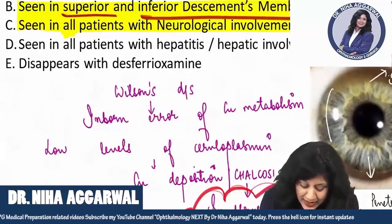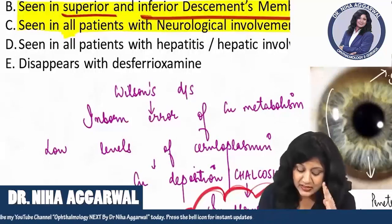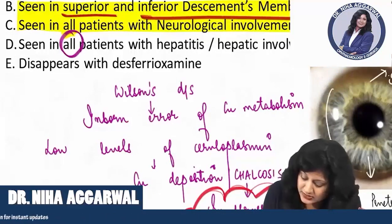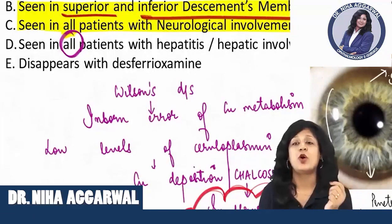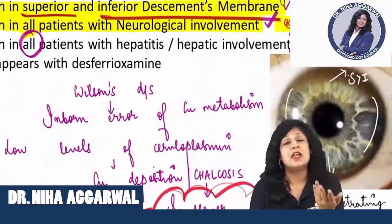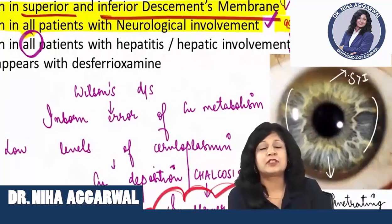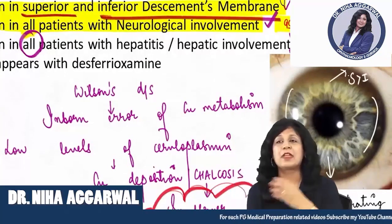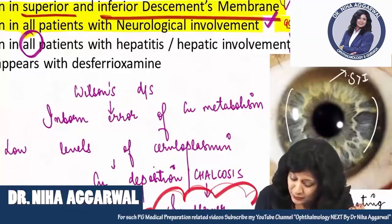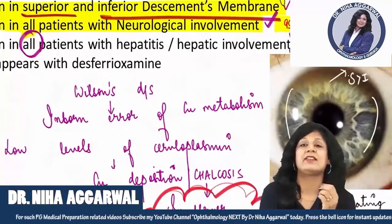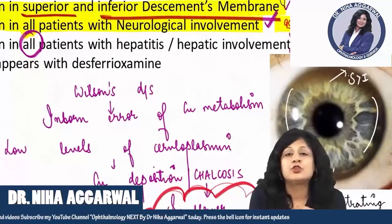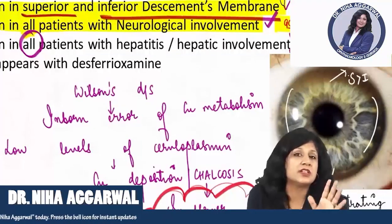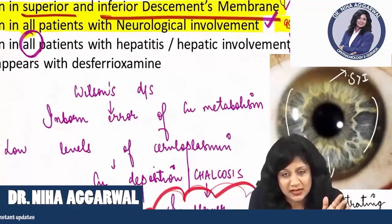Option D says it is seen in all patients with hepatic involvement. This is actually wrong — it is not all. I think this is about 50%, because some books say 30%, some say 40%, some say 50%, some say 60%. Even if I take the maximum value of 65%, that is far away from 'all'. So this statement is wrong — it is not associated with all the patients who are having hepatic involvement.